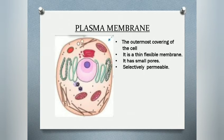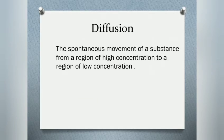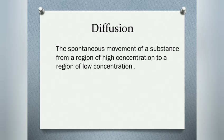Some substances like carbon dioxide and oxygen can move across the cell membrane by a process called diffusion. The spontaneous movement of a substance from a region of higher concentration to a region of lower concentration is called diffusion. This can be understood through the visual which is going to be played now.